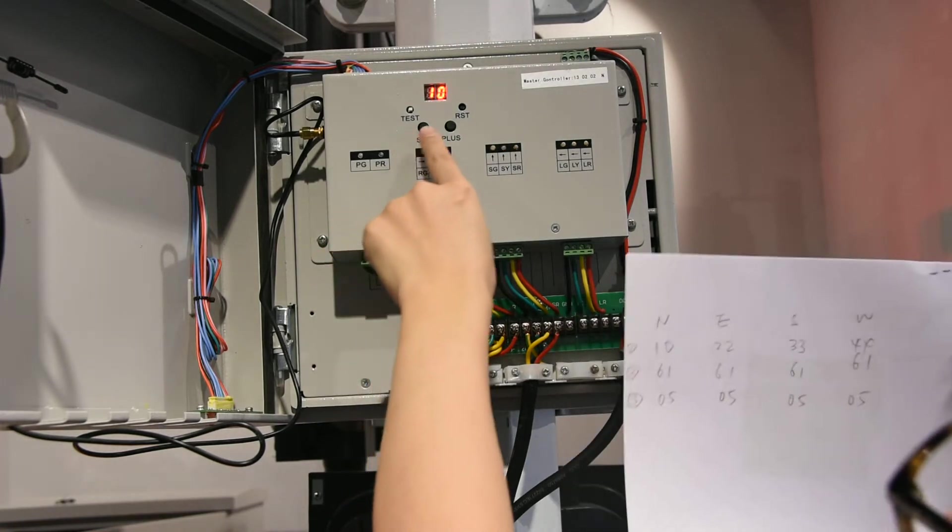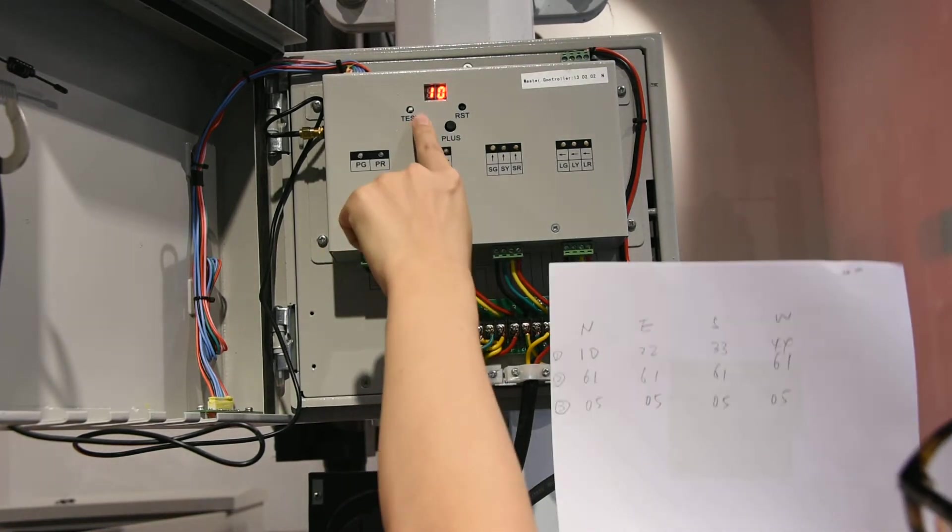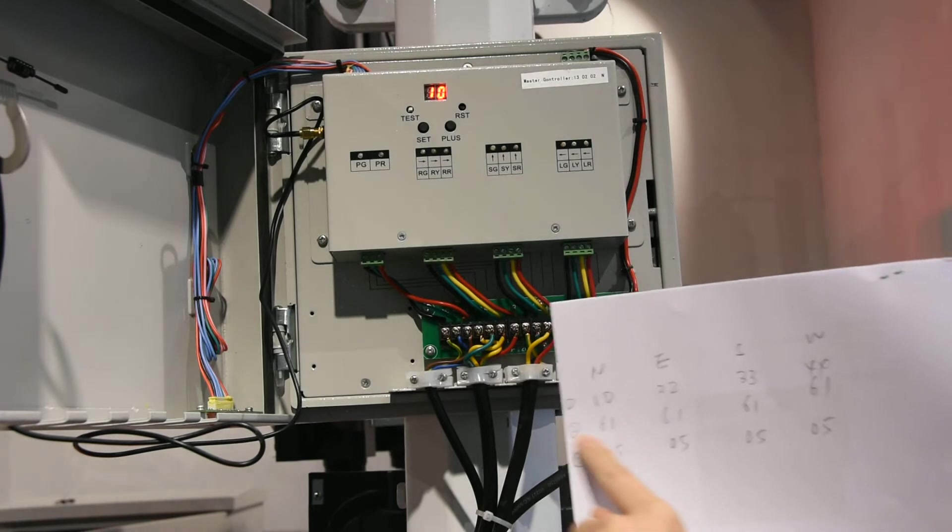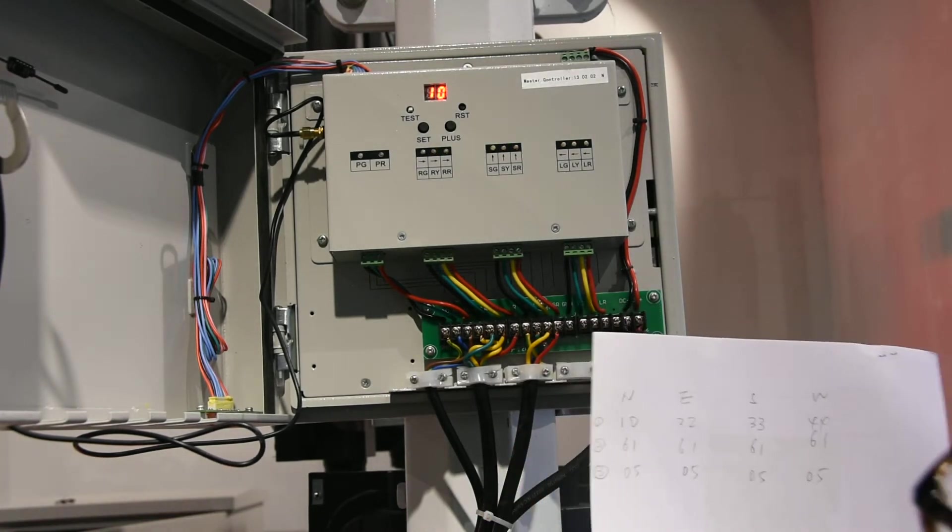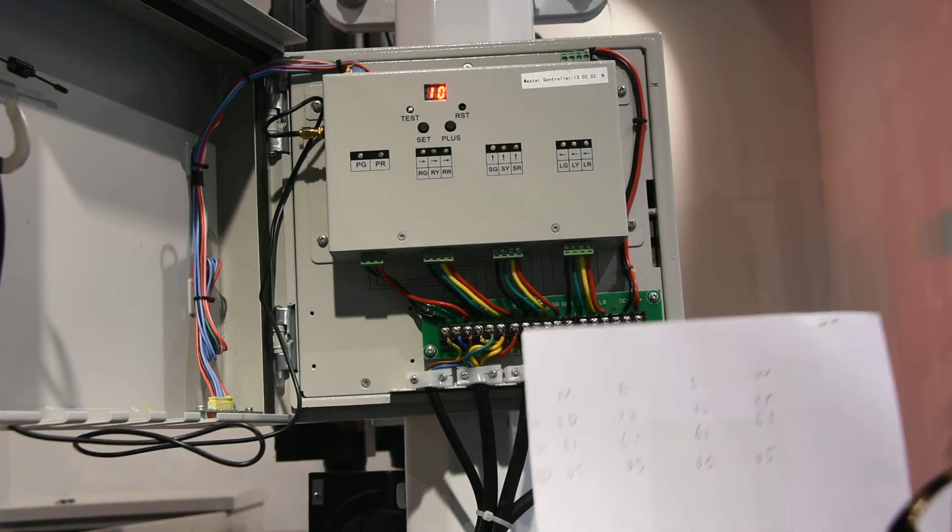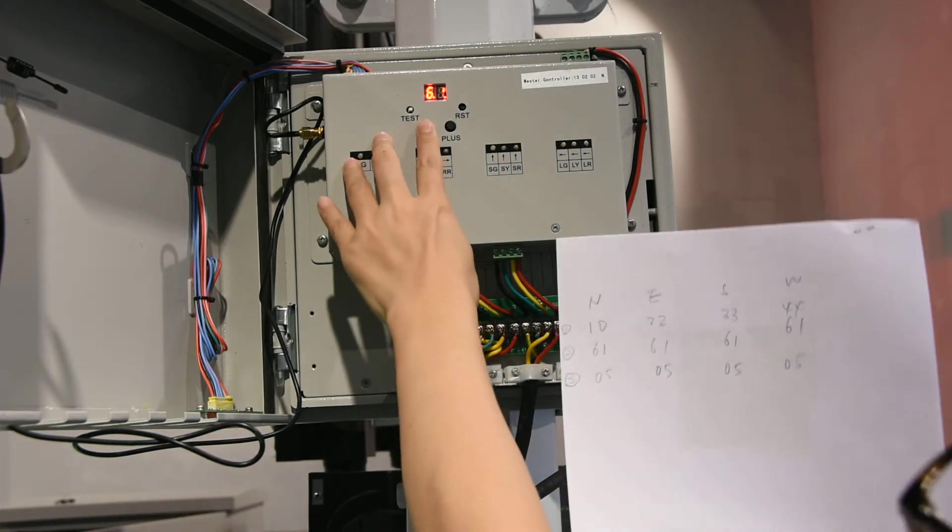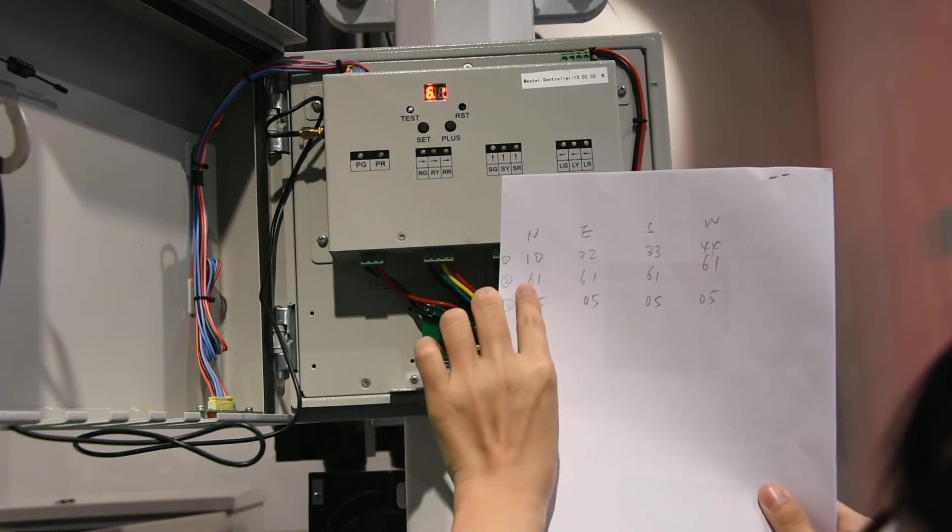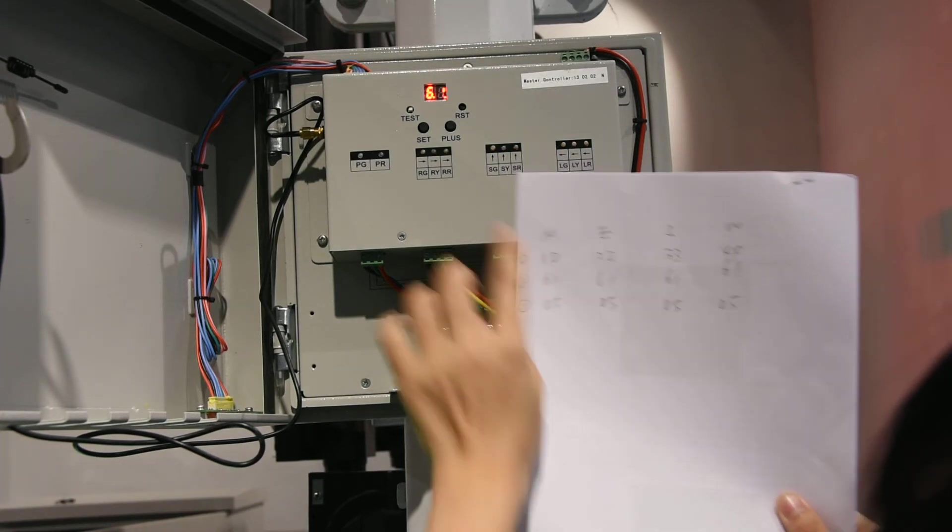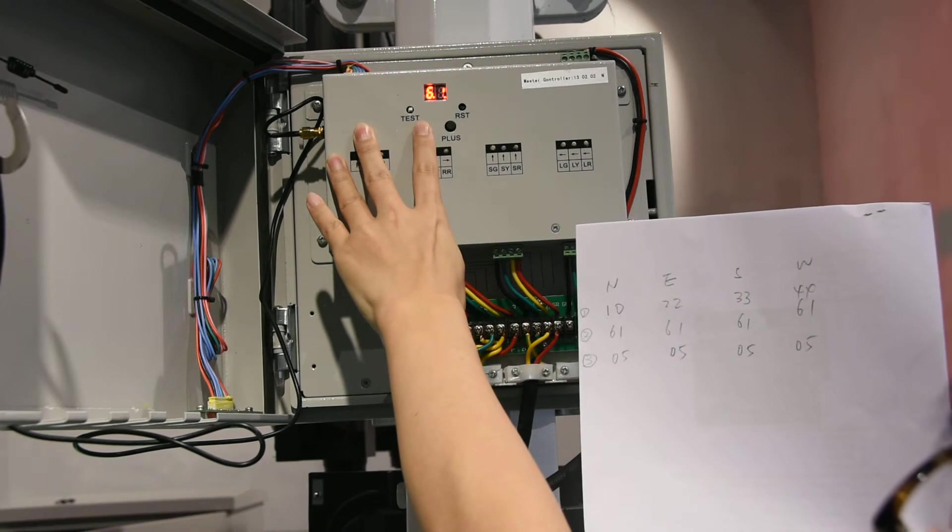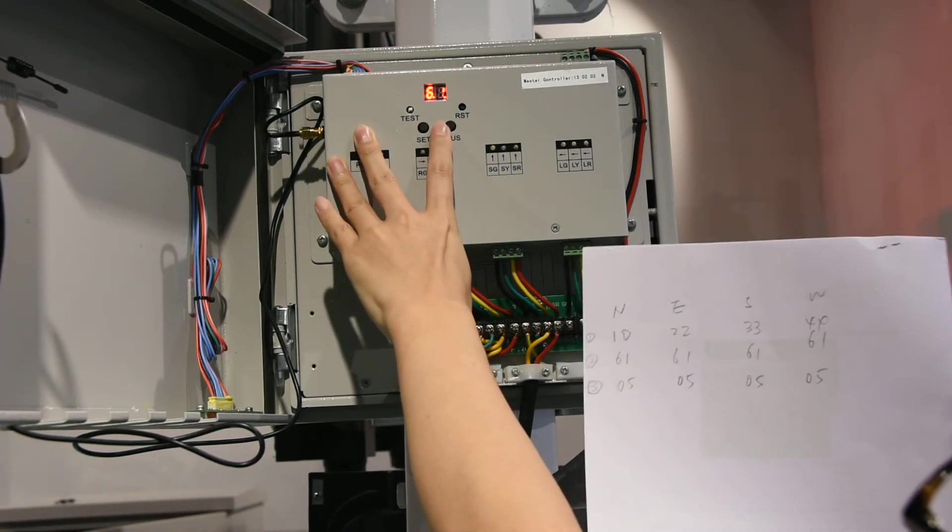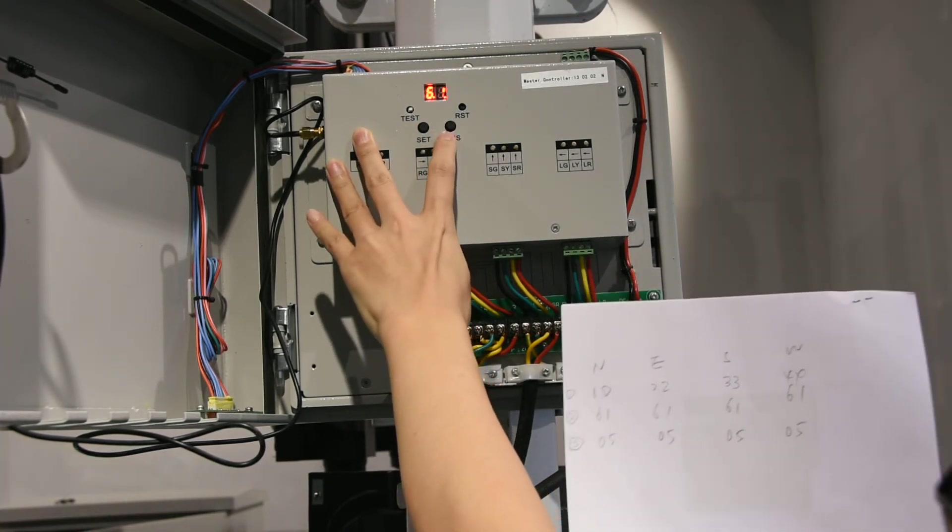Secondly, we go to set up the ID. You can see that here is 6, 6 and 1. You can use the plus to change the number, increase or reduce.